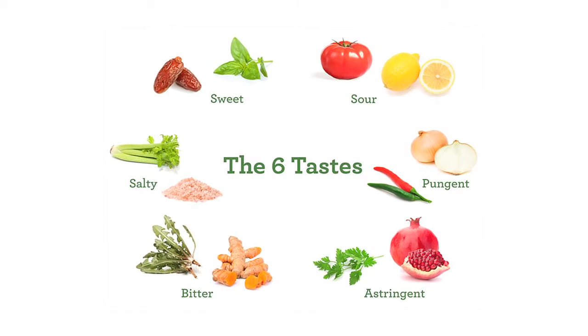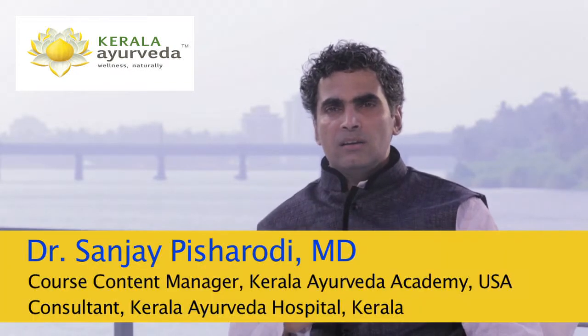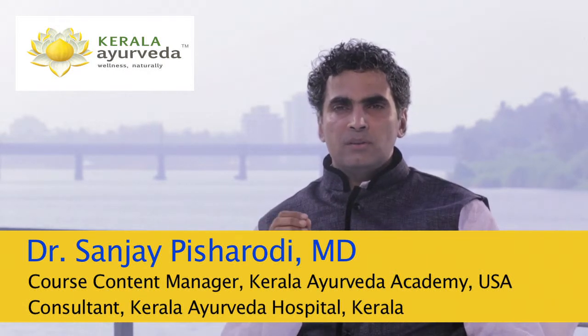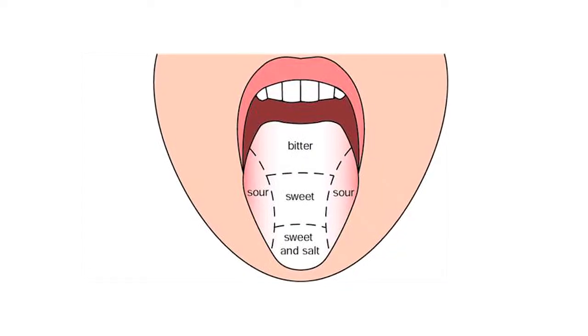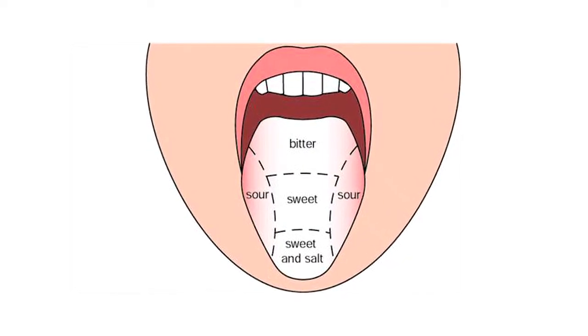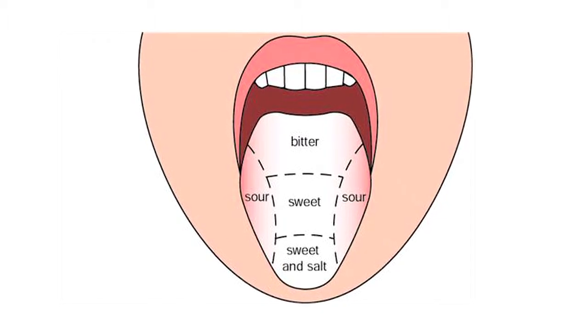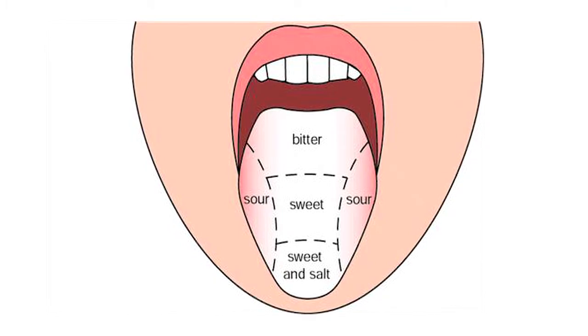How are these tastes determined? There are two methods. One is the perception it produces on the tongue — when we take a certain substance and put it on our tongue, the kind of sensation it produces gives it a particular taste. Secondly, is the effect it produces on the body. Some things may not be perceivable by the tongue but produce a certain effect on the body, and based on that we can say a substance has a particular taste.